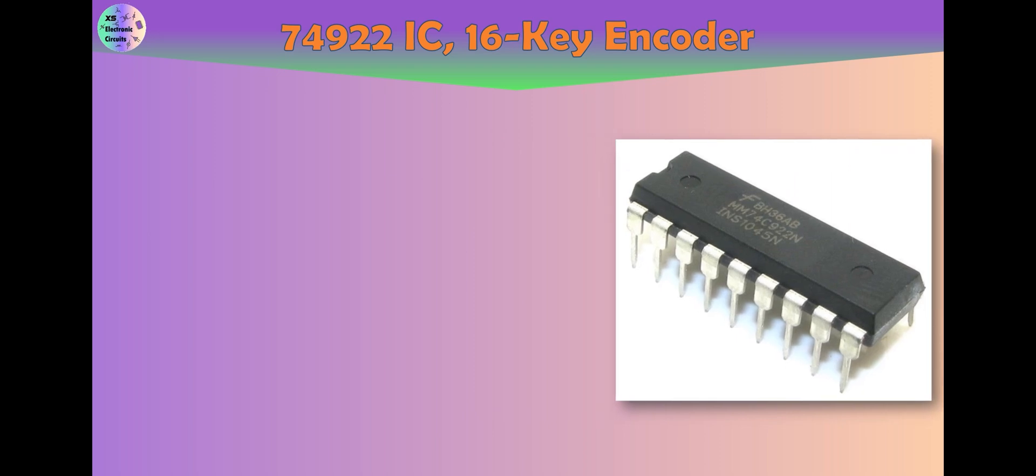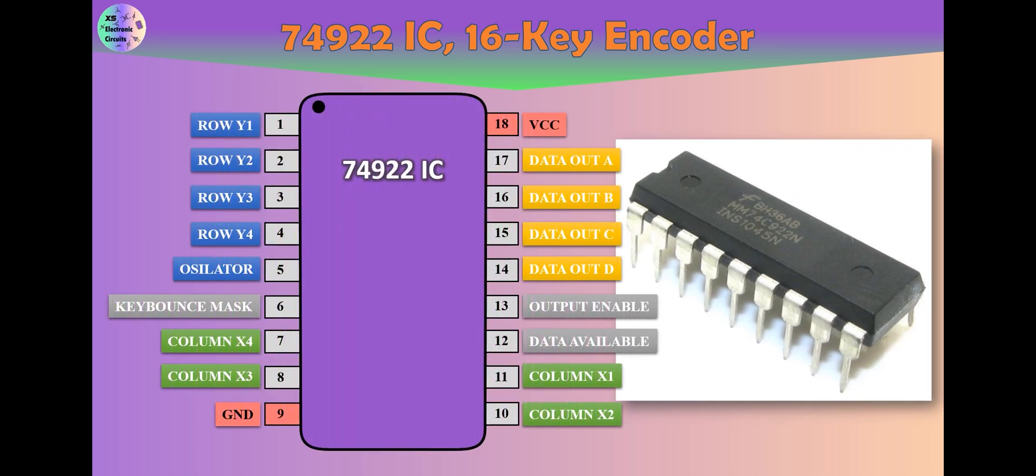Four of the inputs are connected to the 16 key keyboard columns and the other 4 inputs are connected to the keyboard rows. This IC has an internal pull-up resistor.